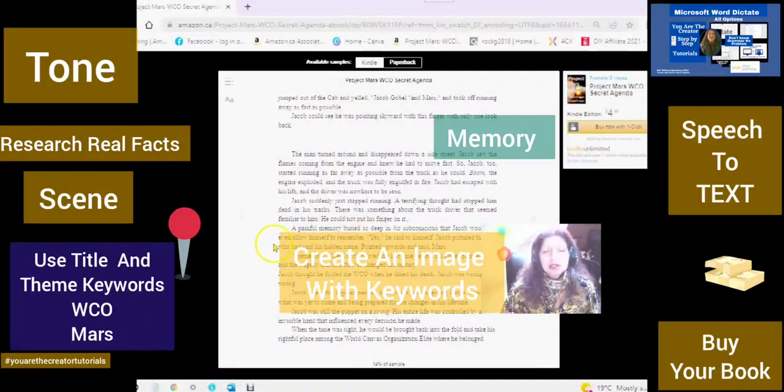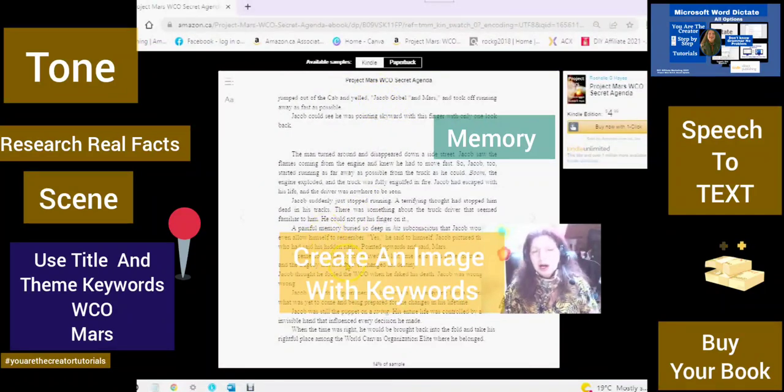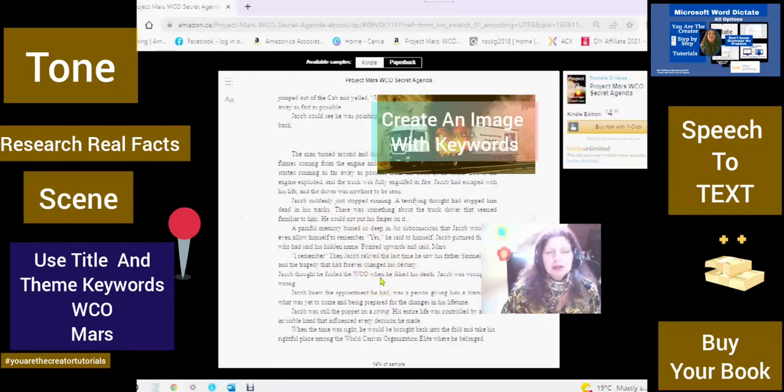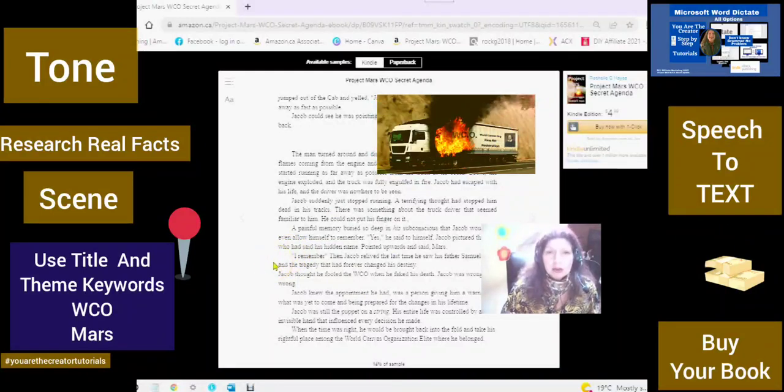Yes, he said to himself. Jacob pictured the man who had said his hidden name, his hidden name, which is Jacob Goble. Remember, I told you his name was Jacob Harding. He pointed upwards and said, Mars. I remember. Then Jacob relived the last time. So now Jacob has a flashback. He's now reliving something also from the past that will later be repeated and also more involved and more in detail as the story goes on.